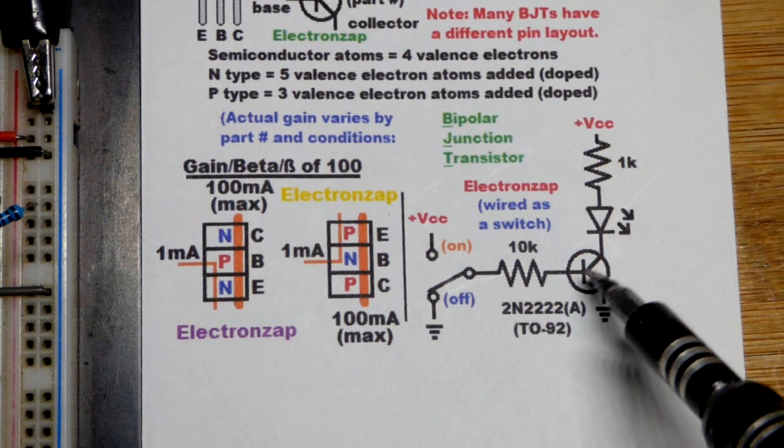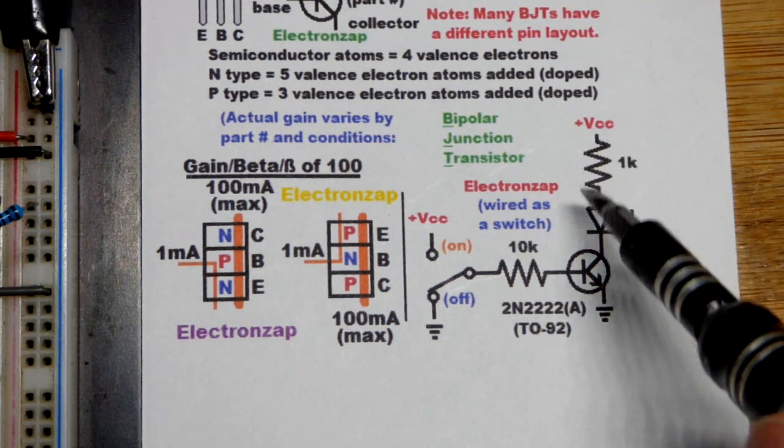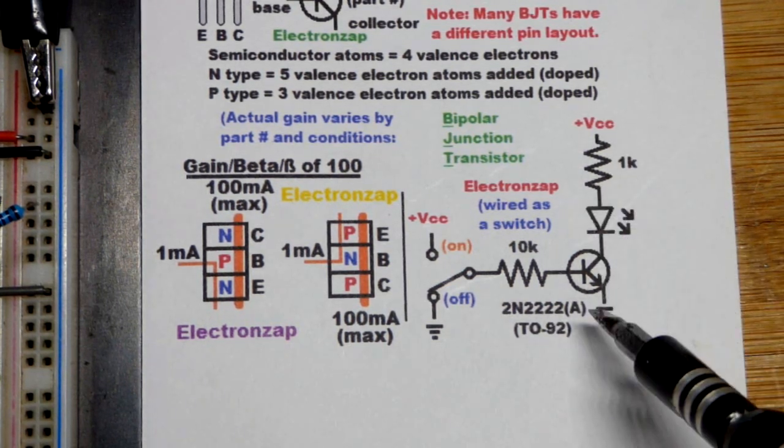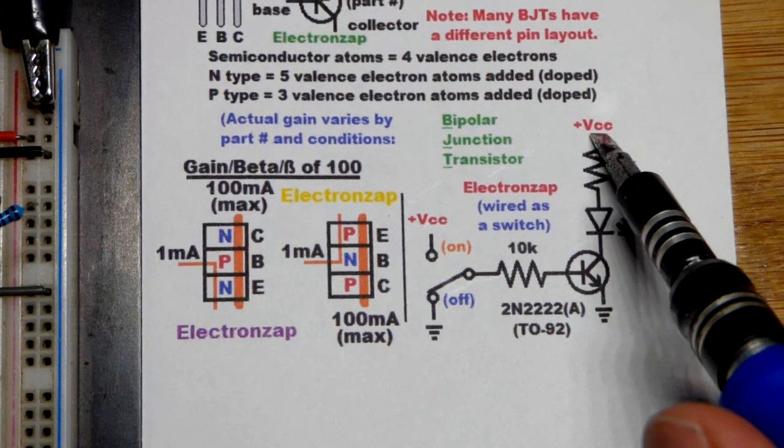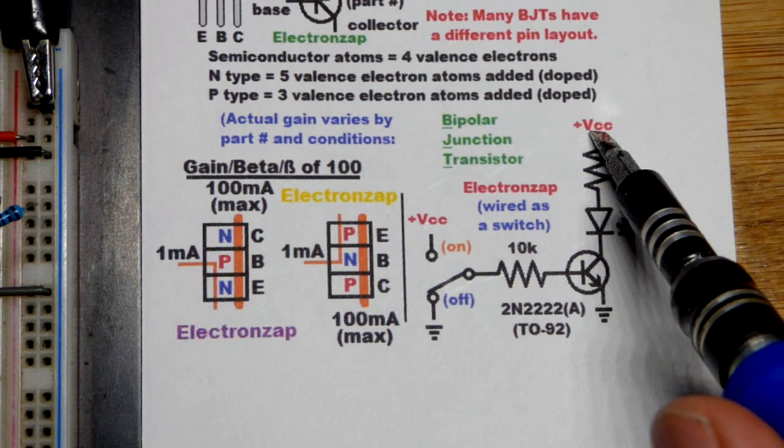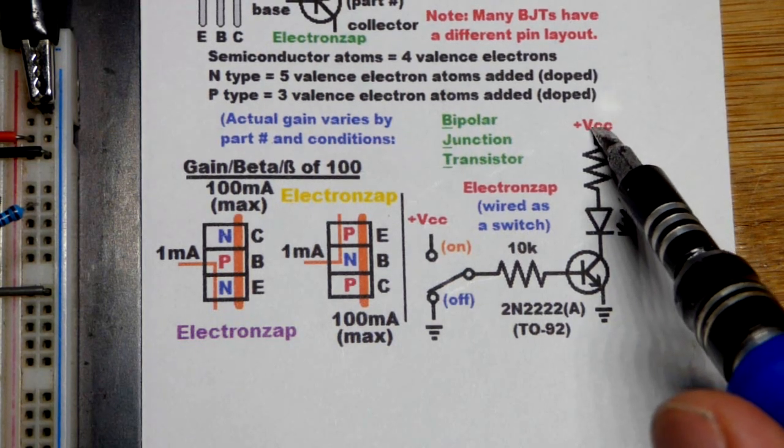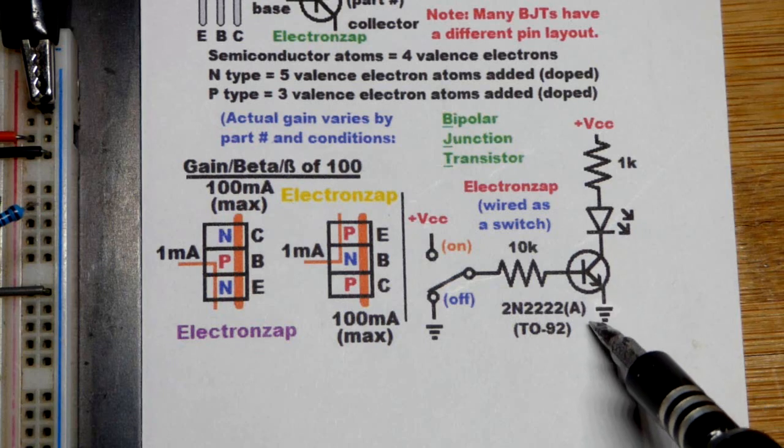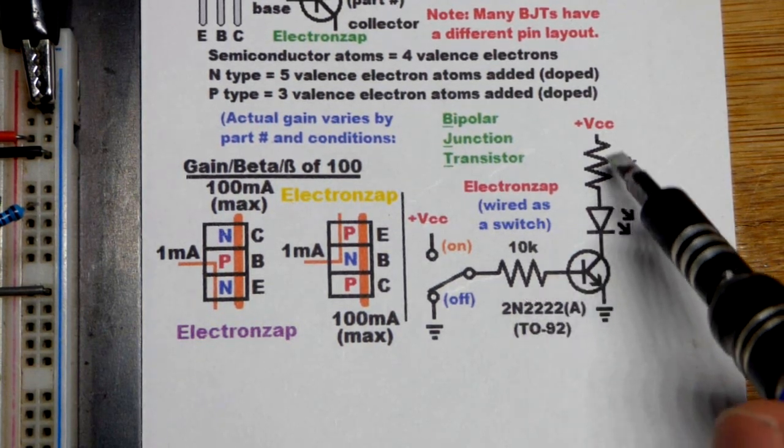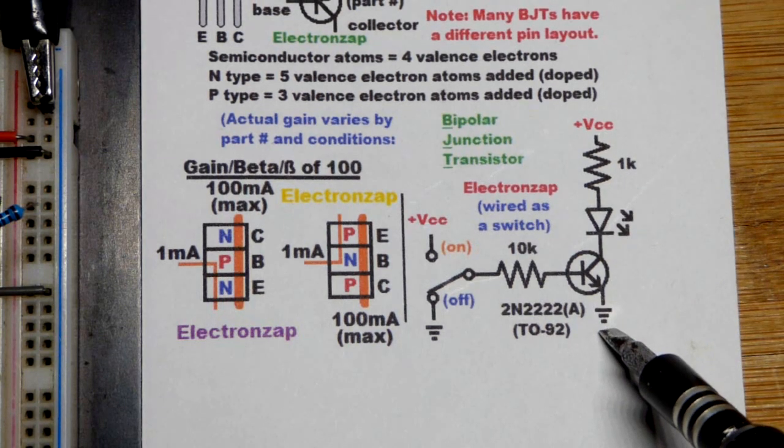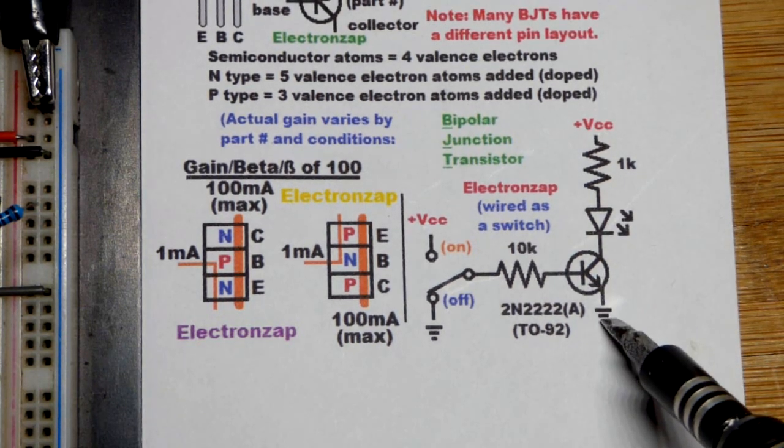We could use a 2N3904 as well. We only need less than 20 milliamps of current, even if we get up to 12 volts. So this is just plus VC means it could be a range of voltages. Probably we would work with 5 to 12 volts in this circuit based on that load because it's only being protected by a 1,000 ohm resistor. It's being protected by a 1,000 ohm resistor when the transistor is conducting.